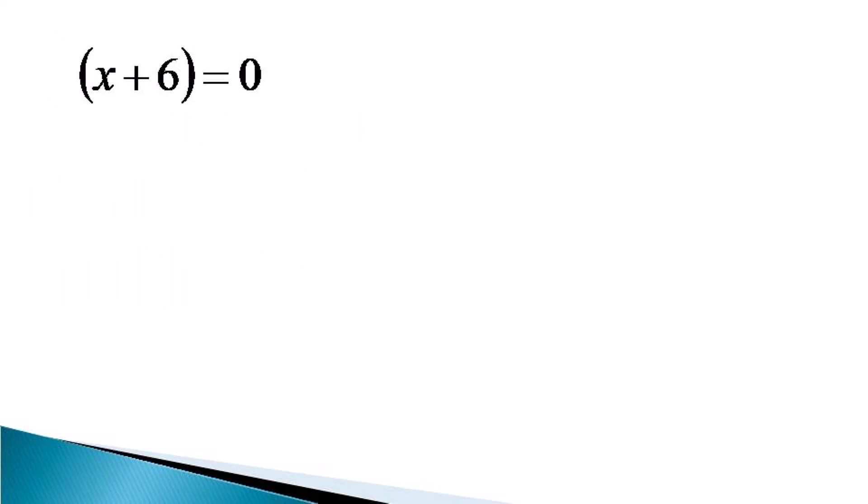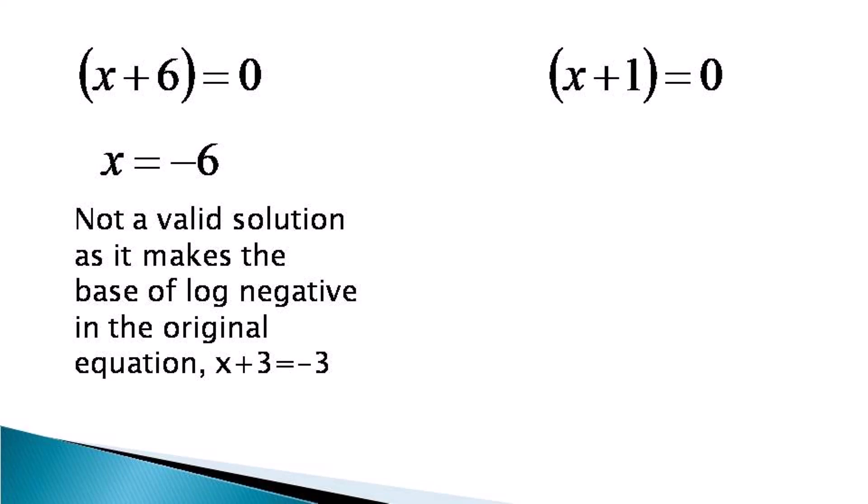Now either x plus 6 or x plus 1 must be equal to 0. So for x plus 6 is equal to 0, we get x is equal to minus 6. But x is equal to minus 6 will not be a valid solution as it will make the base of log negative in the original equation, that is x plus 3 would become equal to minus 3 and the equation itself will not remain valid.